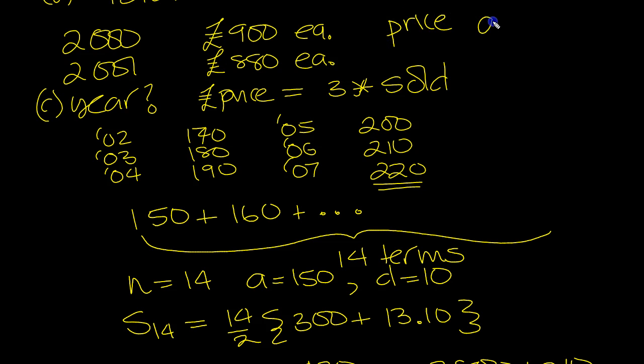In the nth year would be 900 minus 20N. Because the first year it would be n is 1, that would be 2001, it would be 880. When n is 0, it would be 900. So that would be the price.